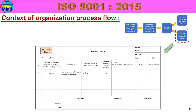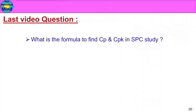Okay friends, this is the ISO 9001:2015 part 6 video. This video is useful to you. If you like this video, please share it and give motivation. If you like this channel, please subscribe and press the bell icon. Now let's go to the question segment. In the next video, we will ask the question: What is the formula to find CP and CPK in SPC study?